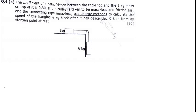Let's talk about the pulley system. The question states: the coefficient of kinetic friction between the table top and the 1 kg mass on top of it is 0.30. If the pulley is taken to be massless and frictionless, and the connecting rope massless, use the energy method to calculate the speed of the hanging 6 kg block after it has descended 0.8 m from rest.